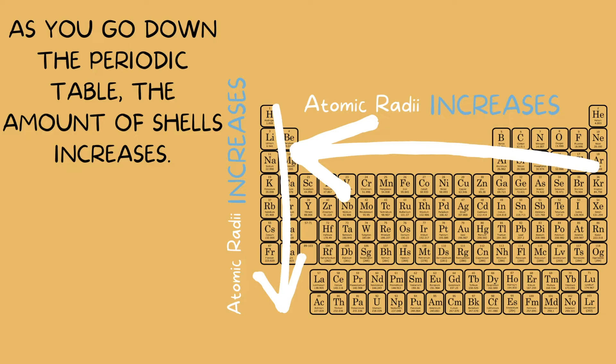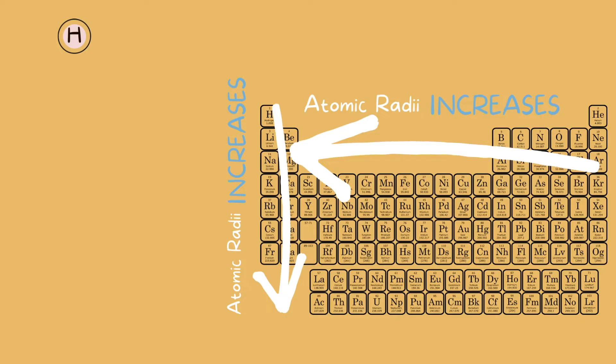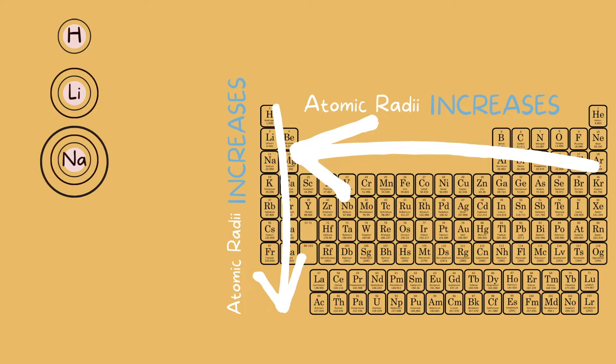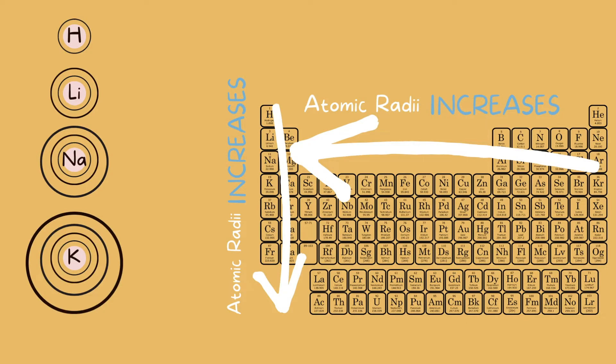Atoms on period 1 have one shell, period 2 have two shells, period 3 have three shells, and so on until we get down to period 7 with seven shells. For example, on period 1 we have hydrogen with one shell, period 2 we have lithium with two shells, period 3 we have sodium with three shells, and period 4 we have potassium with four shells.